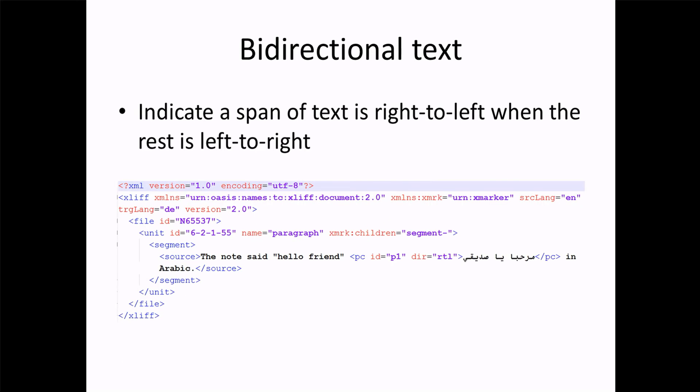Bidirectional text is when the majority of the document is left-to-right, but a particular string needs to be read right-to-left. In the source, we say 'the note said hello, friend,' and then the literal Arabic text is given the dir attribute of R2L, which is right-to-left.